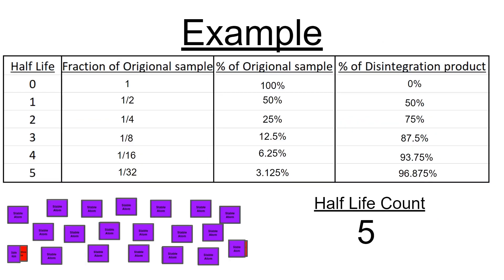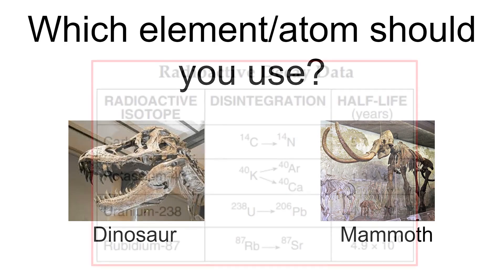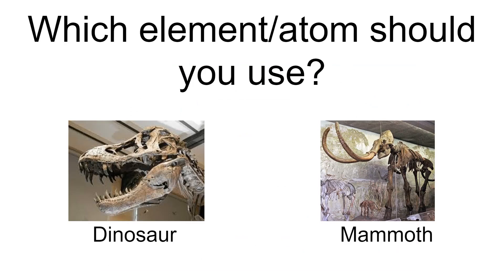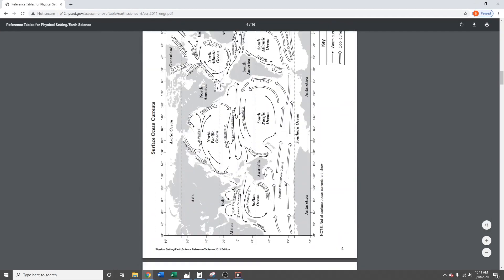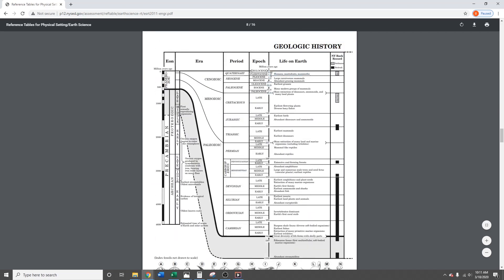Now, depending on what type of sample you're using — what type of atom — the half-lives are going to be different. So what element or atom should you use if you're trying to date a dinosaur fossil versus a mammoth fossil? Mammoths were around not so long ago; dinosaurs, a lot longer. Mammoths are within 1.8 million years ago; dinosaurs are between 200 and 250 million years ago.